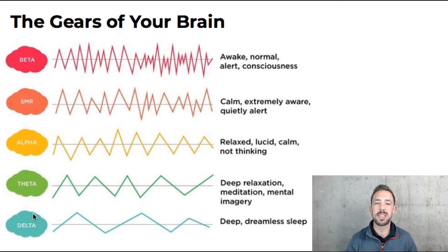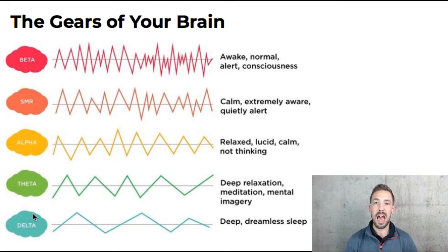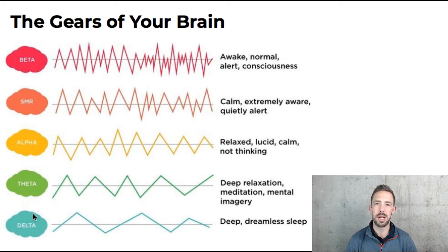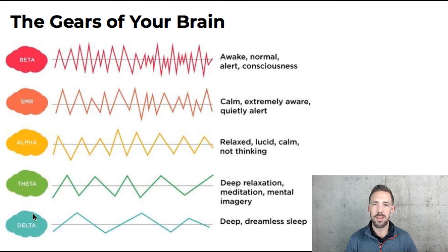A step above that is theta — maybe that's like second gear. That's when you're half asleep, half awake and kind of dreaming, but you kind of remember it. It's like when your alarm went off, you snoozed it for 15 minutes and you're kind of half awake, half asleep. That's your theta state — deep relaxation, mental imagery, daydreaming, and also a meditative state.